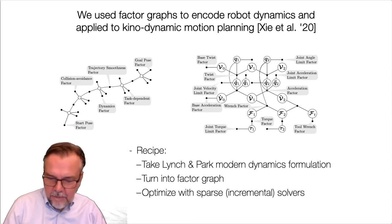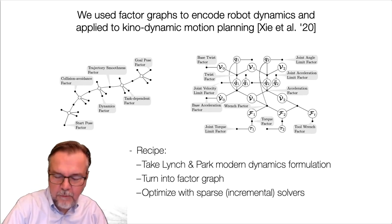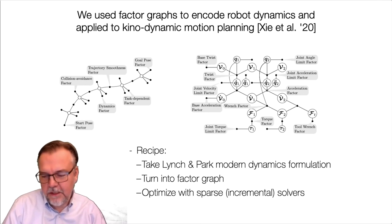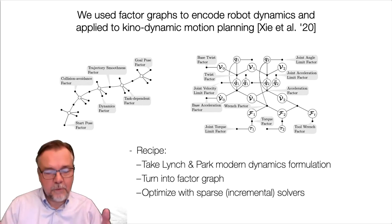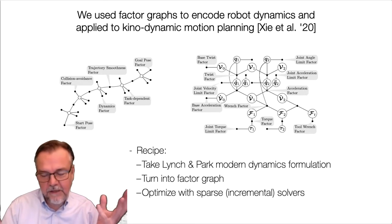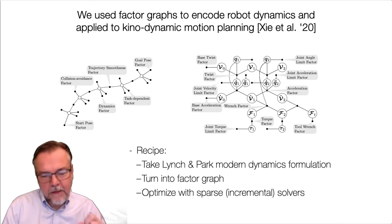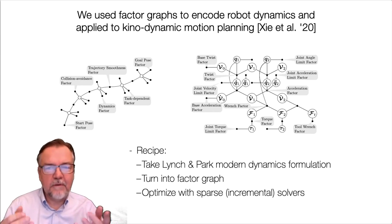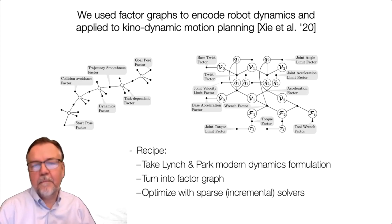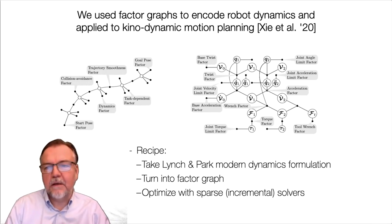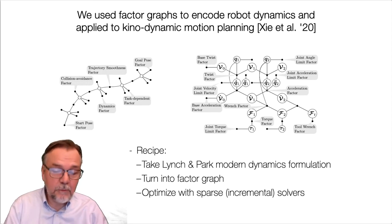That was kinematic planning. I also want to highlight work by my PhD student Mandy Chi, who thought about the dynamics of robots — which is quite important in a space context, where dynamics are very predictable. You can take all these dynamics and encode them in factor graphs. This is a factor graph about the dynamics of a mobile manipulator, but it can be applied in many different contexts, enabling kinodynamic motion planning.